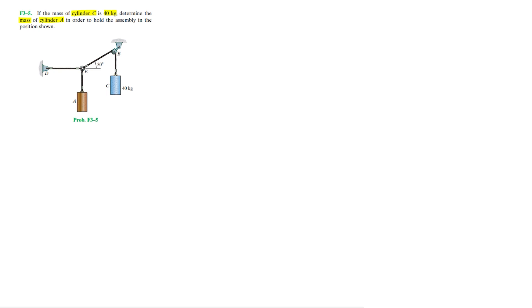As we can see in the diagram, we have two cylinders, cylinder A and C, and these are held in place by two pins at points D and B.